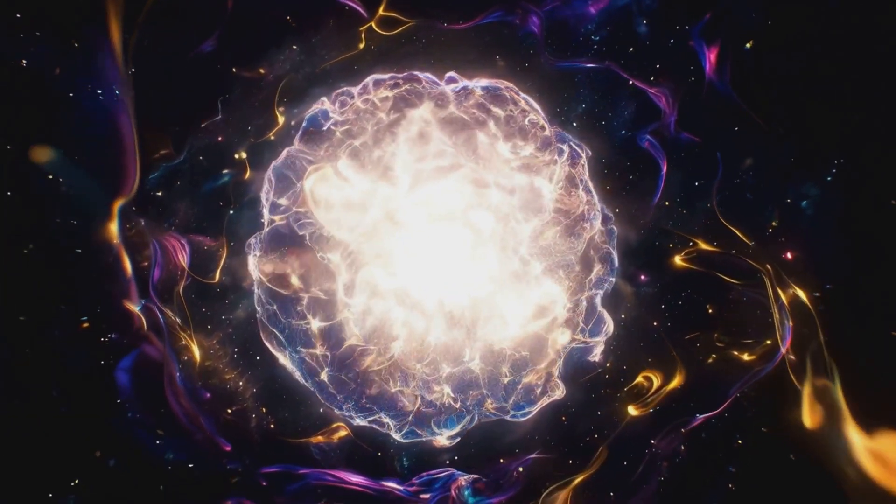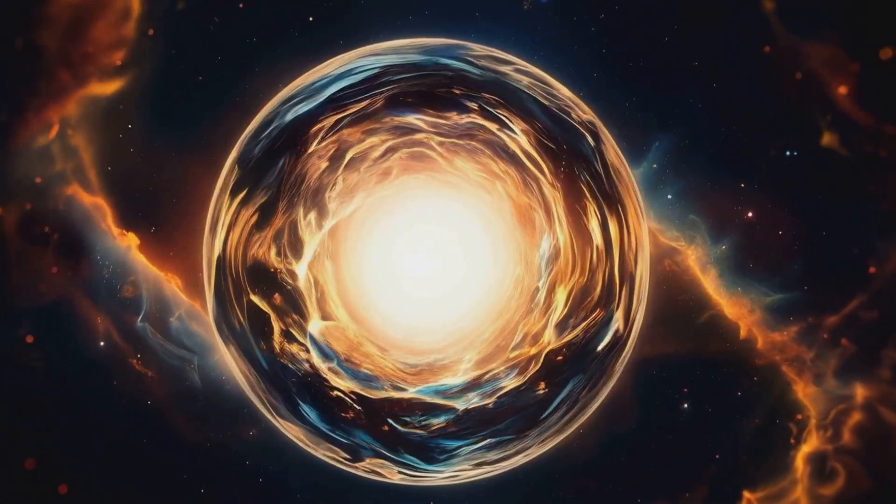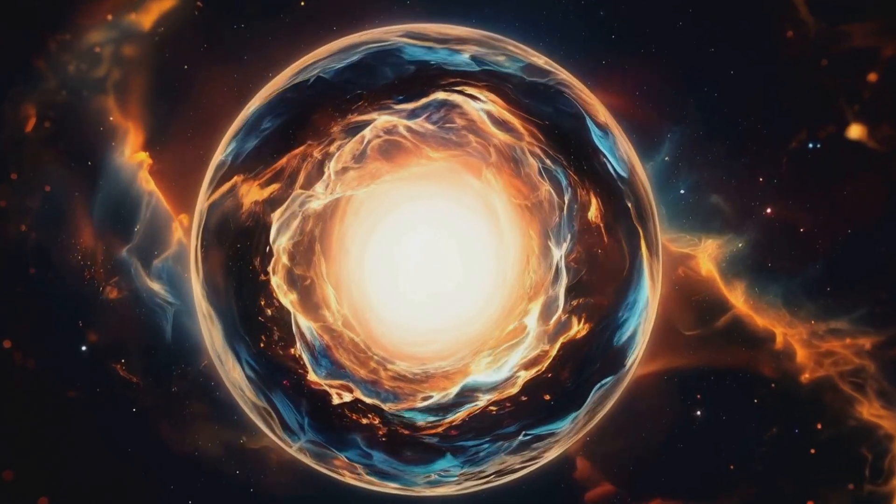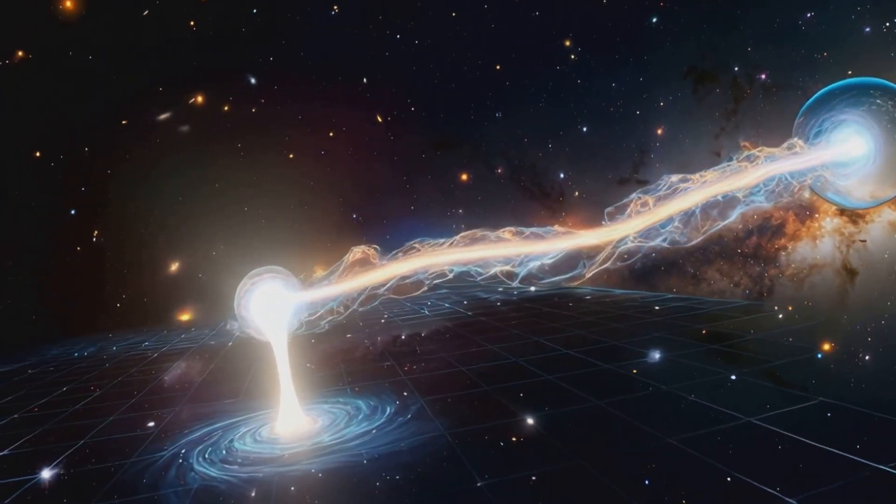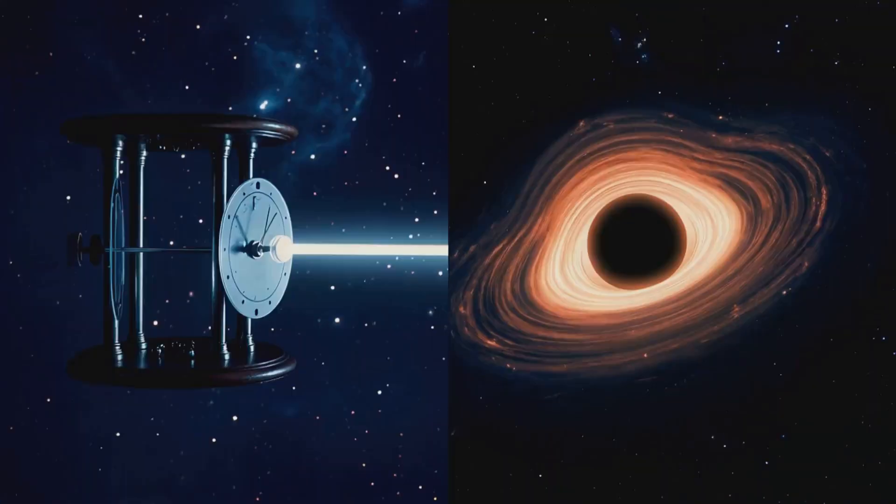Surrounding it is the event horizon, a screen where the singularity's information is spread out as interference patterns. The singularity and the event horizon are entangled, mirroring each other perfectly.